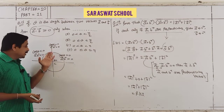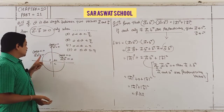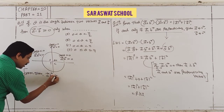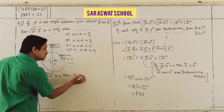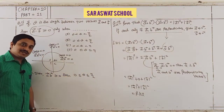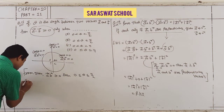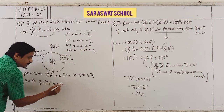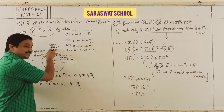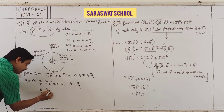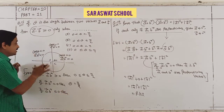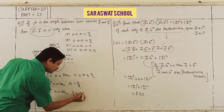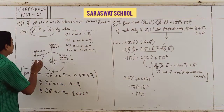So if A·B ≥ 0, the angle θ lies in [0, π/2] — including both 0 and π/2. If A·B = 0 then θ = π/2 exactly. If A·B < 0 then θ lies in (π/2, π) — obtuse angle. Question 16 is done.